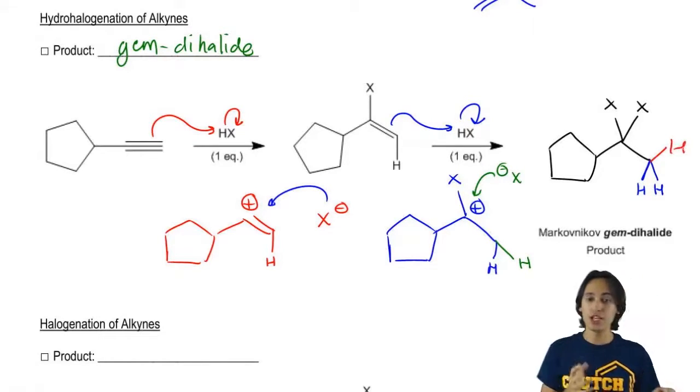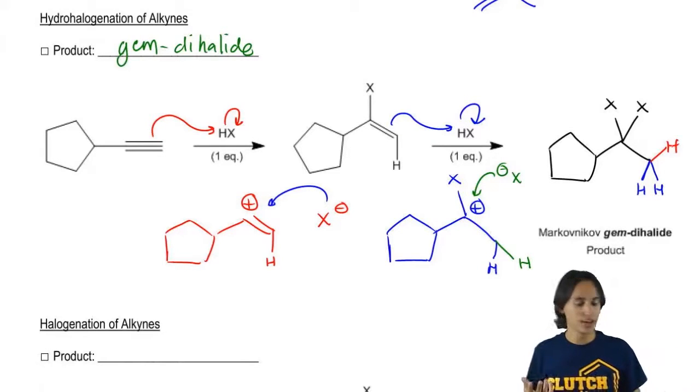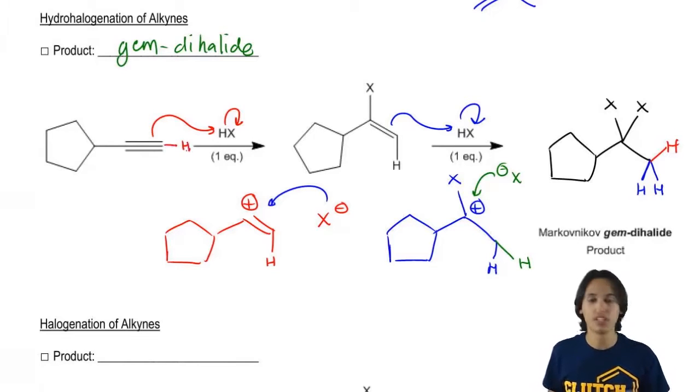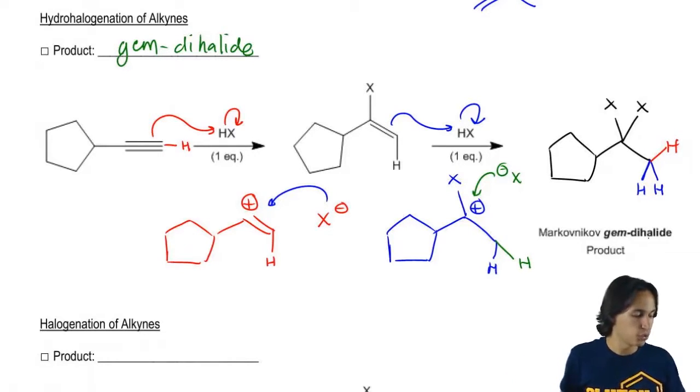Yeah. Well, that H was always there though. That kind of looks messy. I'm just going to redraw that. That H was always there because that's the H that was originally on that triple bond anyway. I'm just saying that through this reaction, we wind up adding H twice and X twice.